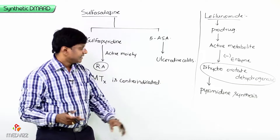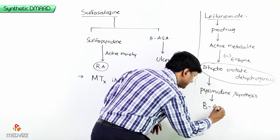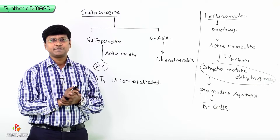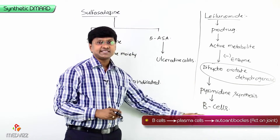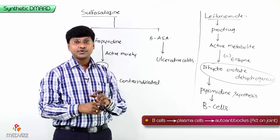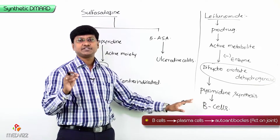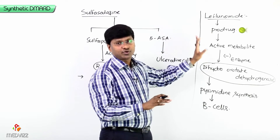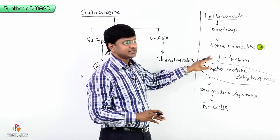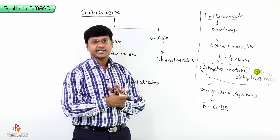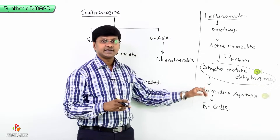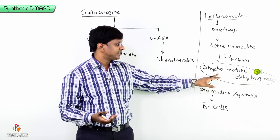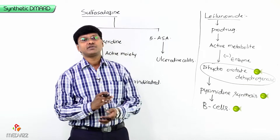Pyrimidine synthesis is required for the growth of B-cells. As discussed in the introduction, B-cells generate plasma cells which produce autoantibodies that act against the joint — playing an important pathophysiological role in rheumatoid arthritis. By inhibiting dihydroorotate dehydrogenase, pyrimidine synthesis does not occur and thereby the growth of B-cells is suppressed.